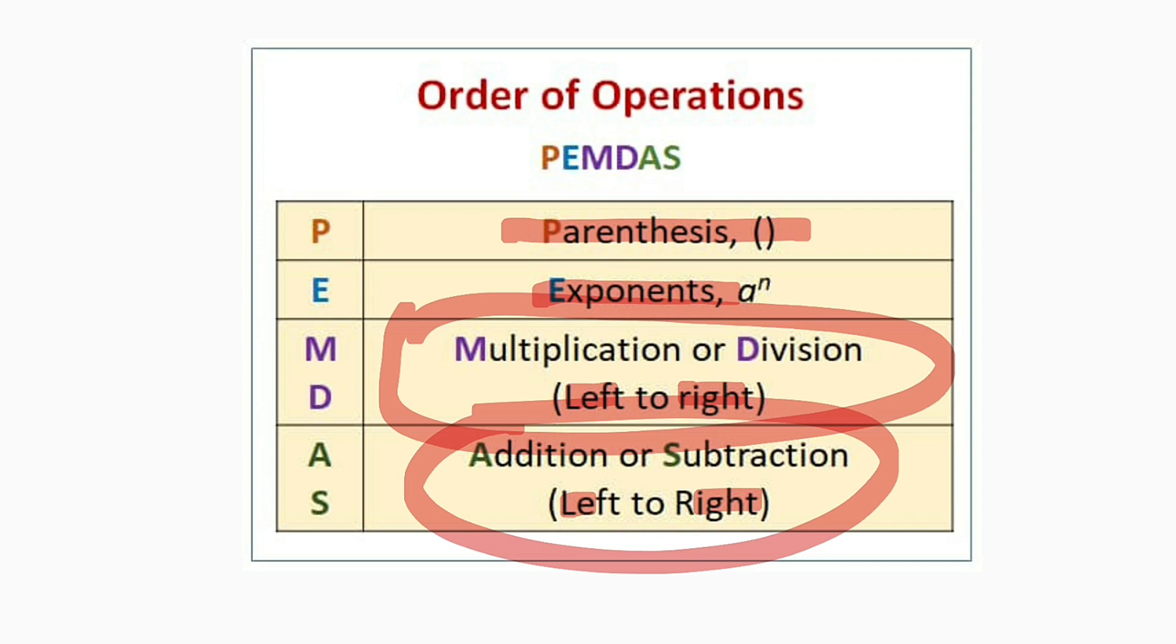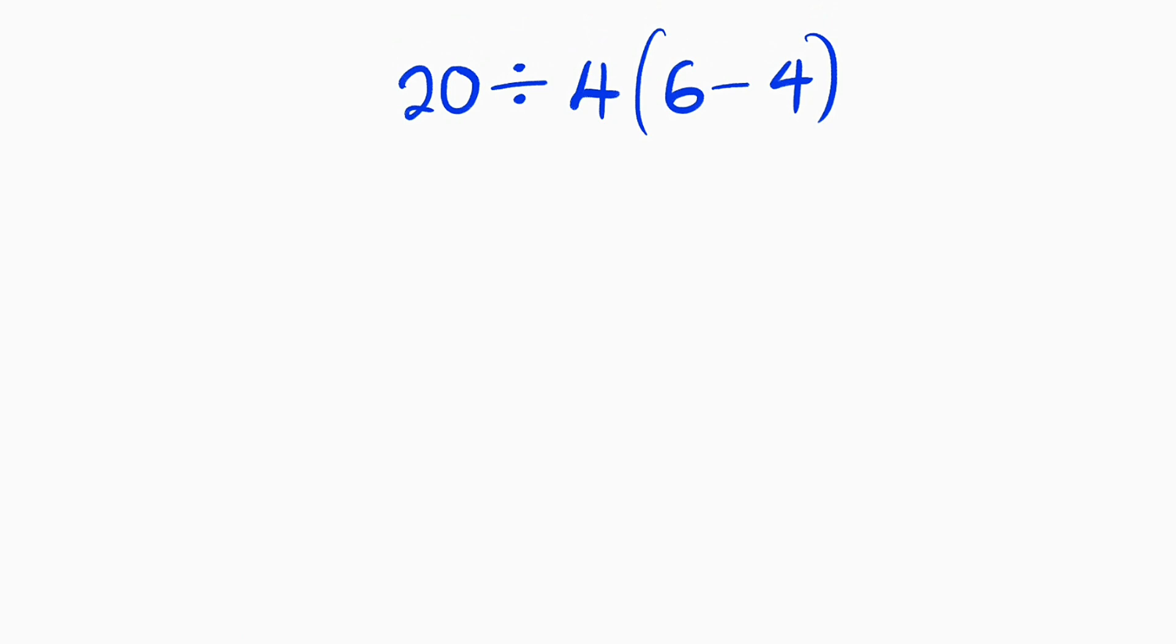So now let us apply this idea to solve that problem. Let me rewrite it here. We have PEMDAS. Let us start with P. P stands for parenthesis. It means you should simplify 6 minus 4. It does not mean you should distribute. P stands for simplifying what is right inside that parentheses.